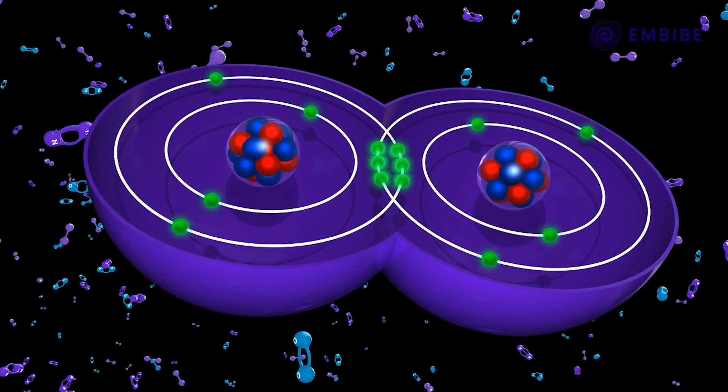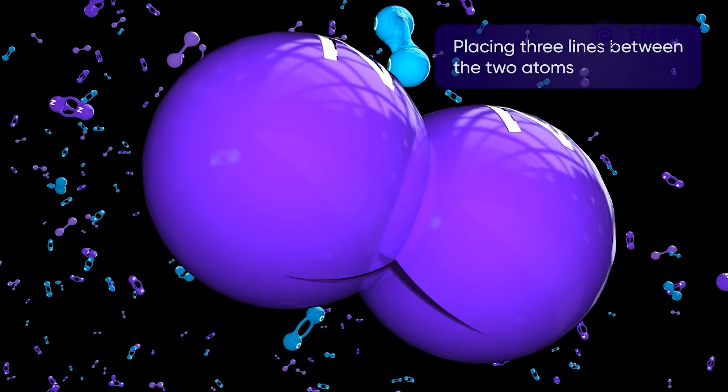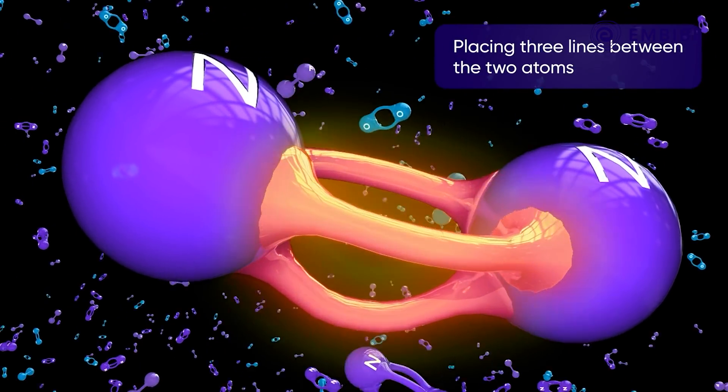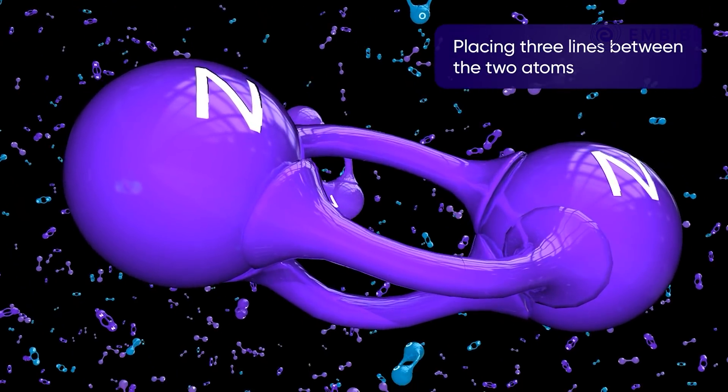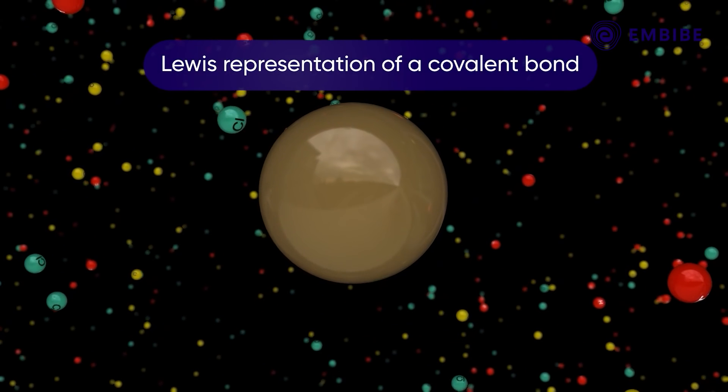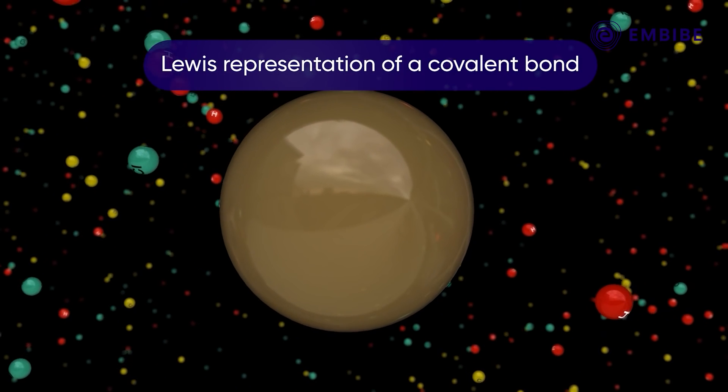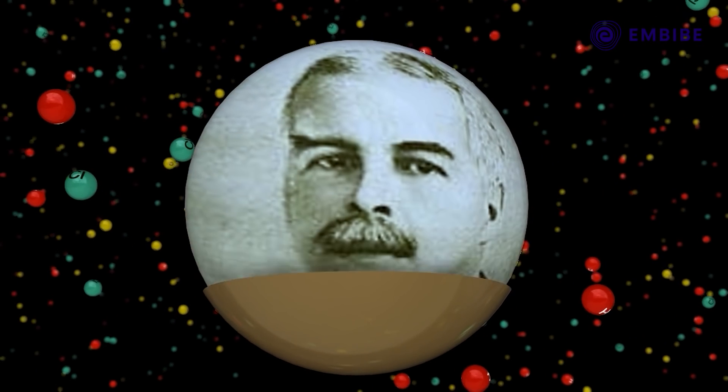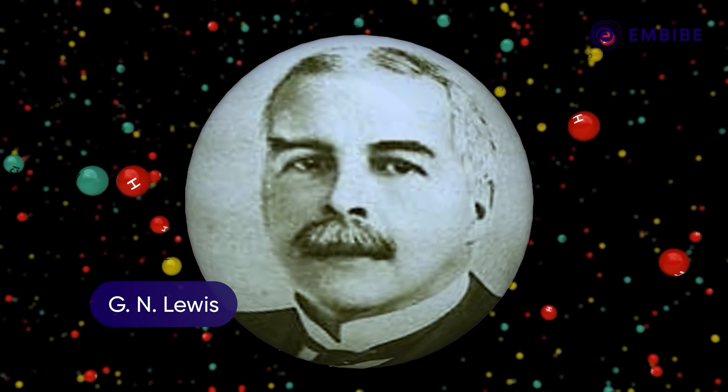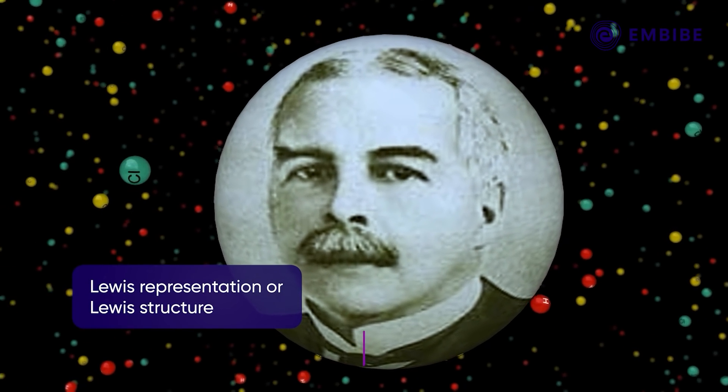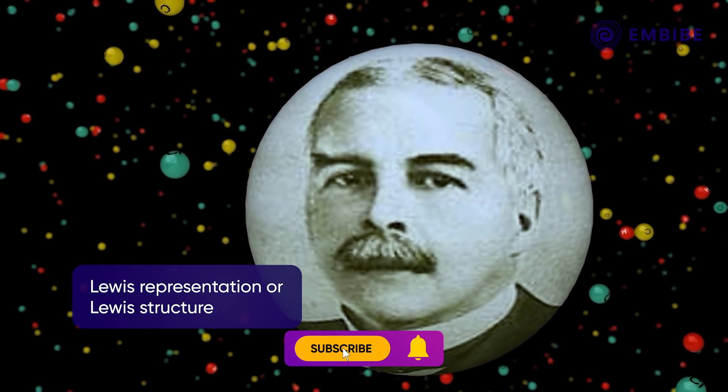Lewis representation of a covalent bond: This method was proposed by G.N. Lewis and is known as the Lewis representation or the Lewis structure.